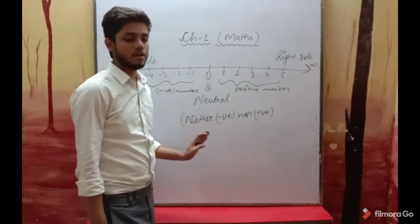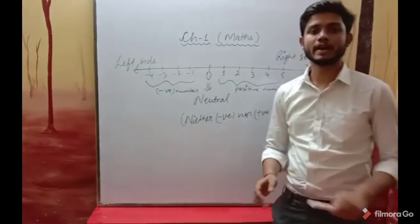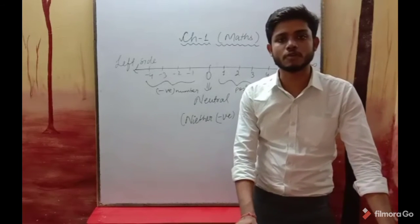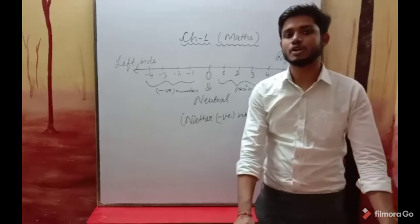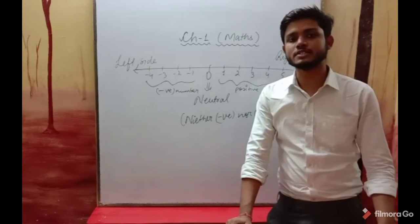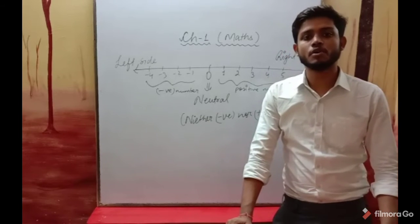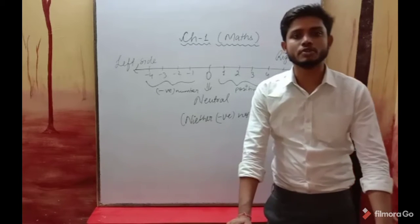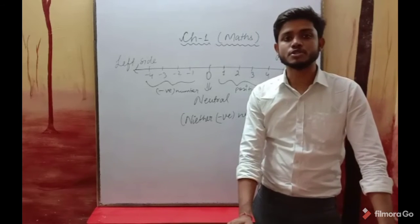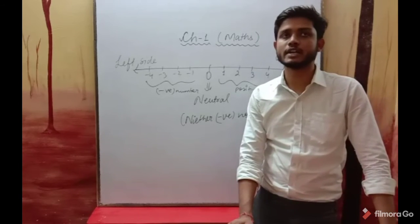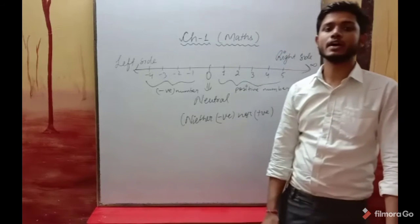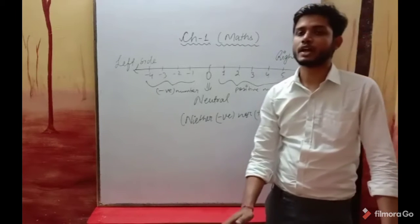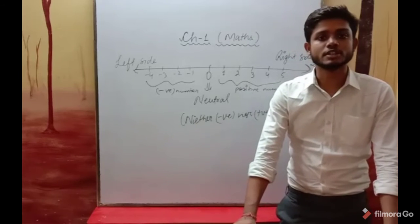Now, all counting numbers starting from 1 to infinity are called natural numbers. The numbers which start from 1 and go to infinity are called natural numbers. Whole numbers include natural numbers plus zero — so starting from 0 to infinity.